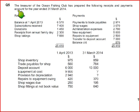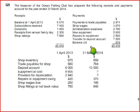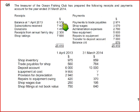The question states that the treasurer of the Ocean Fishing Club has prepared the following receipt and payment account for the year ended 31st March 2014. We already discussed that a receipt and payment account in a not-for-profit context means it is a cash book — the debit side is receipts and the credit side is payments. The balance brought down is the bank balance because it appears on the debit side; if it were on the credit side, it would be a bank overdraft.